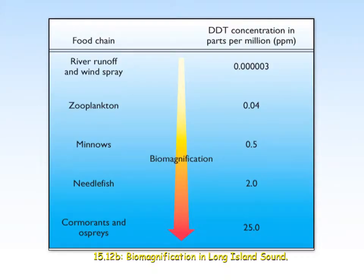This is an example of biomagnification, looking at DDT. The concentration in the environment is very, very low, but as you move up trophic levels — through zooplankton into more predatory organisms — the concentration gets exponentially higher. That's obviously going to have big impacts if you start eating cormorants or ospreys.